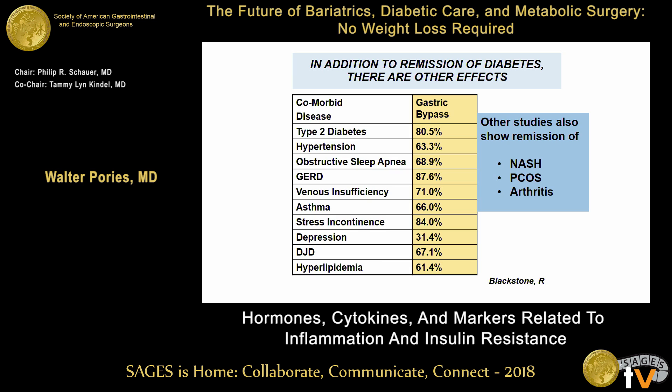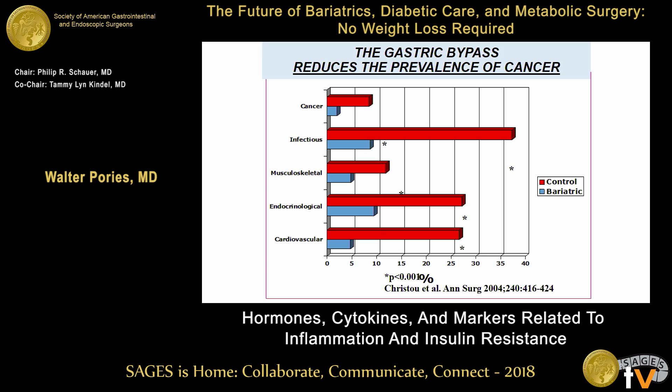As Blackstone pointed out, there are a whole number of other remissions — and that's an incomplete list, because there's also NASH, PCOS, arthritis, renal failure, and so on. This is really a widespread effect. Bariatric surgery, or metabolic surgery, is now the single most effective way to prevent cancers, with a marked reduction in the prevalence of cancer within five years after surgery.